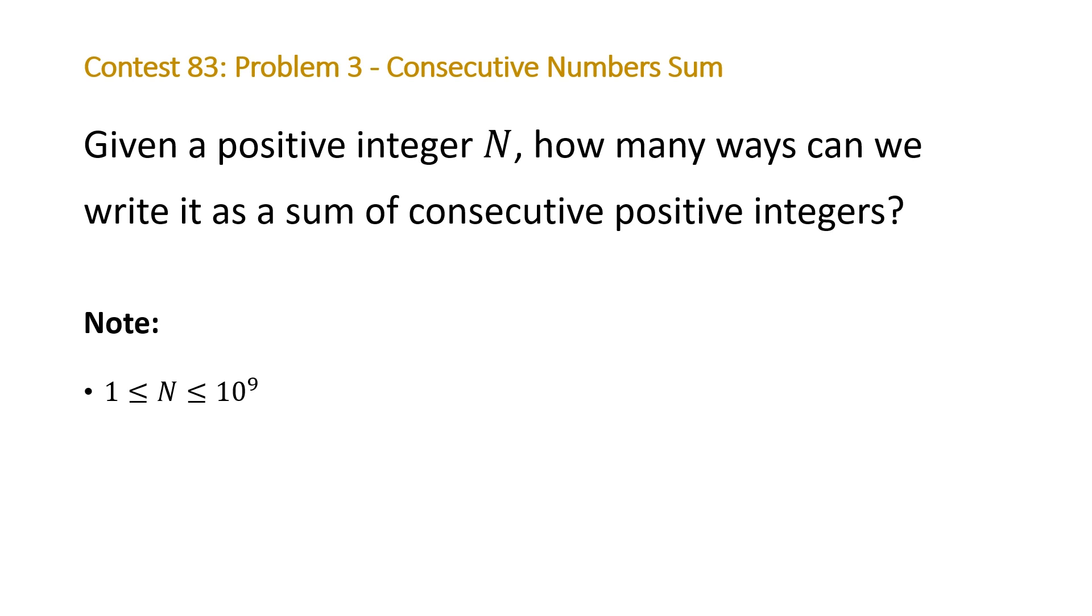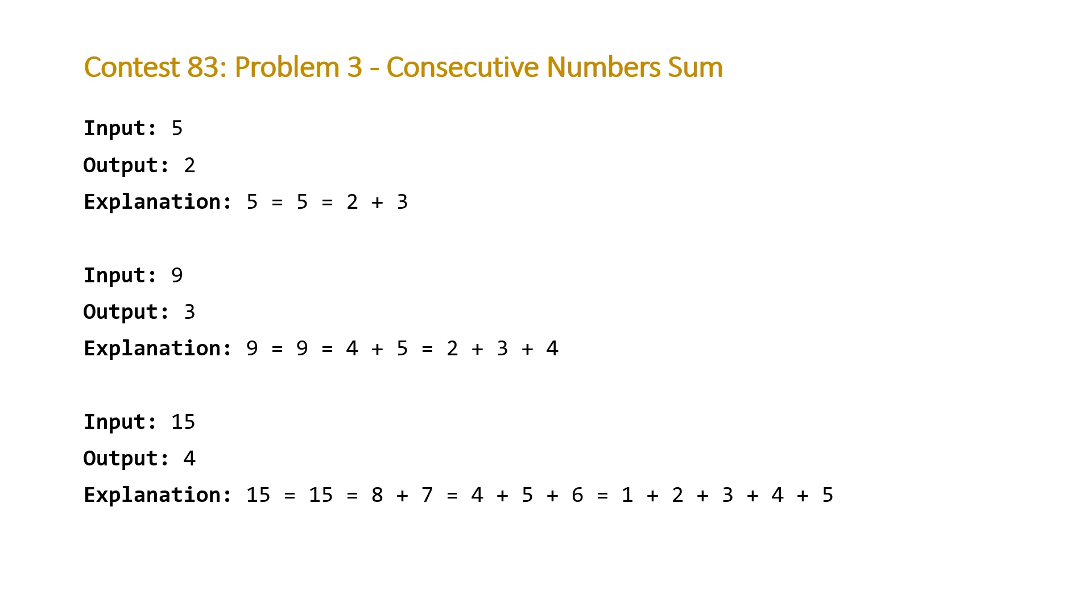Let's take a look at the examples that LeetCode provided us with. Here we have three examples. The first one, our input N is equal to 5 and our output should be 2. That's because we have two consecutive sequences that sum to 5. The number itself is a sequence of length 1, and there's a sequence of length 2 starting at 2, which is 2 plus 3 that sums to 5.